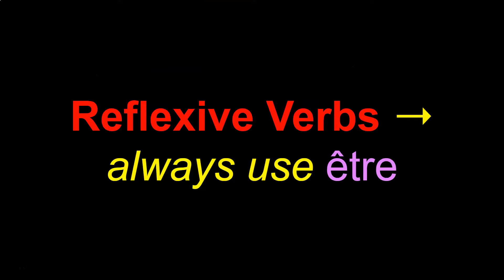Moving on, reflexive verbs always use être as their auxiliary. You might be asking: what is a reflexive verb? Reflexive verbs are verbs where the subject is performing the action on themselves — in other words, the action is being reflected back onto the subject.